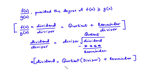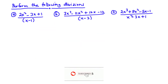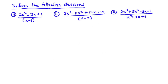So we say that the dividend is equal to the quotient times the divisor plus the remainder. Now having this information in mind, we can now perform division of some polynomial functions. Let's solve some examples. We are going to perform the following divisions — we have three questions: A, B, and C. Let's start from A.